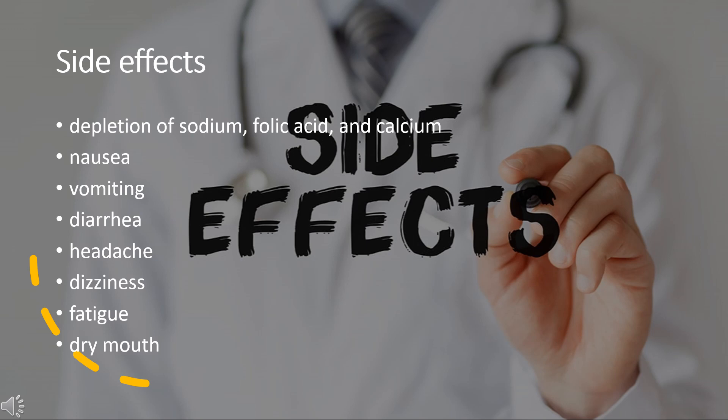Serious side effects may include heart palpitations, tingling or numbness, fever, chills, sore throat, rash, and back pain. Triamterine can also cause kidney stones through direct crystallization or by seeding calcium oxalate stones. Triamterine is best avoided in patients with chronic kidney disease due to the possibility of hyperkalemia. People using this drug should use salt substitutes cautiously.